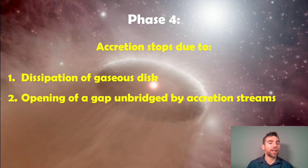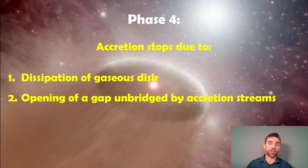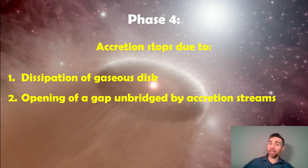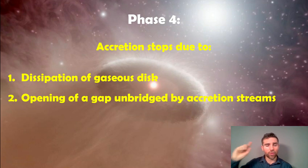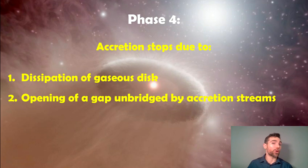An interesting point is that the time frames involved are quite long, and disc lifetimes can sometimes be shorter than the actual formation rate of these planets — specifically for ice giants further out in the disc, where formation time frames become greater and greater. This means we need a different mechanism to form those, which highlights one of the key problems with core accretion: the time frames can be longer than the lifetime of the disc before it disappears.